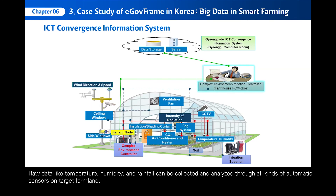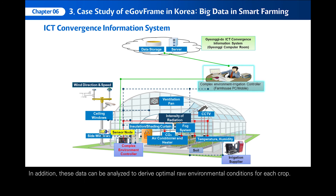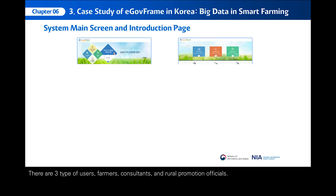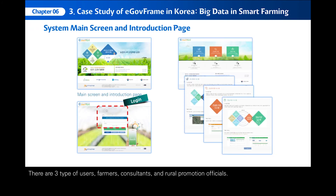Raw data like temperature, humidity, and rainfall can be collected and analyzed through all kinds of automatic sensors on target farmland. In addition, these data can be analyzed to derive optimal environmental conditions for each crop. There are three types of users: farmers, consultants, and rural promotion officials. Farmers can operate and monitor smart farm equipment through wireless farming sensors.